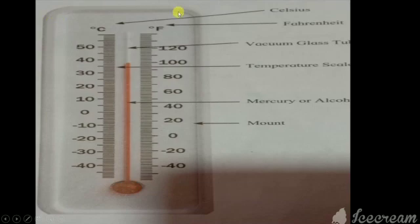Here first the mount is there, and inside a glass is kept. Inside the glass, it has C degree and F degree, Fahrenheit and Celsius. In the middle, in the vacuum glass tube, there is no air, but liquid material is inside.